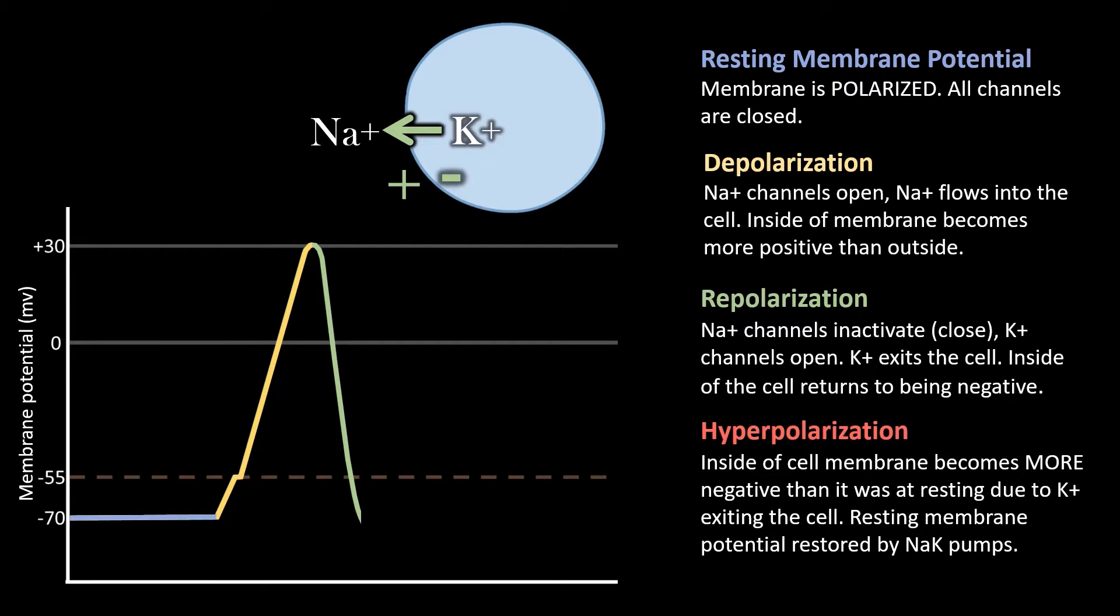So hyperpolarization occurs when the inside of the cell becomes more negative than it was to start with because that positive potassium keeps exiting. So anything below regular resting membrane potential is hyperpolarization, and regular resting will be reestablished by those sodium-potassium pumps.